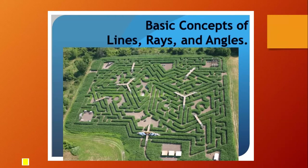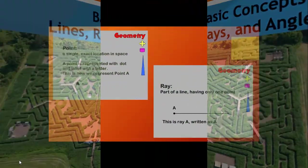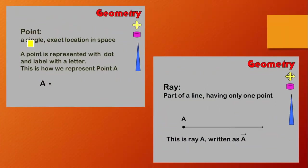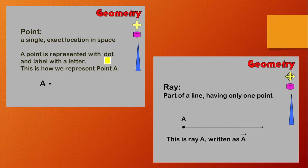What is a point? A point is a single exact location in space. A point is represented with a dot and labeled with a letter. This is how we represent Point A.